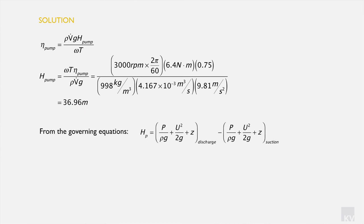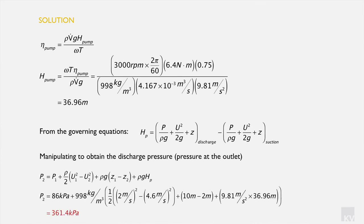Taking the governing head equation and manipulating it to isolate P₂, we substitute all known values back in. We are then able to determine that the gauge pressure at the outlet of the pump is approximately 361 kilopascals.